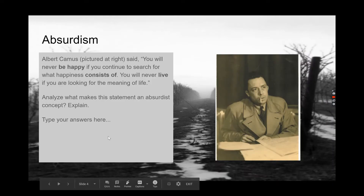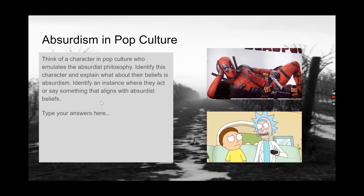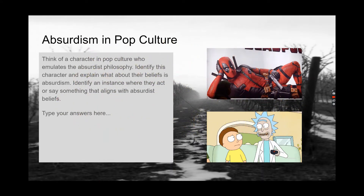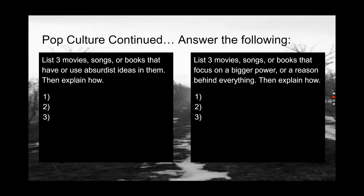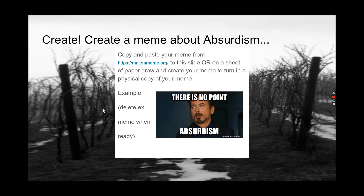Here is just a comprehension check. And again, here is your personalized learning — you're thinking of pop culture references that you would know from your personal background that you can apply here. So you have three movies, songs, or books — things that they have read, seen, or heard that have to do with absurdism.